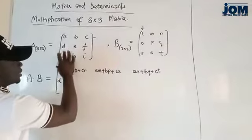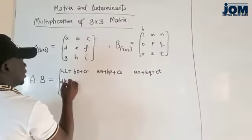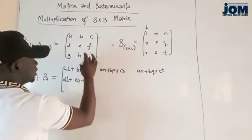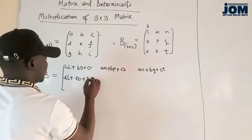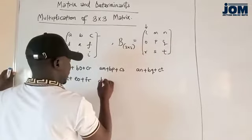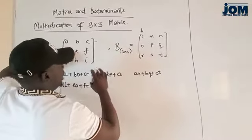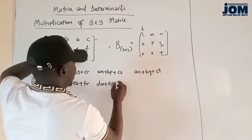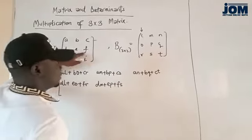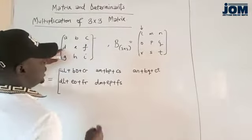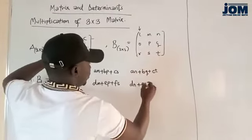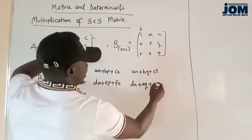And we go back to the second row. D multiplies L, plus E multiplies O, plus F multiplies R. And we go to the second column: D multiplies M, plus E multiplies P, plus F multiplies S. And we go to the third column: D multiplies N, plus E multiplies Q, plus F multiplies T.